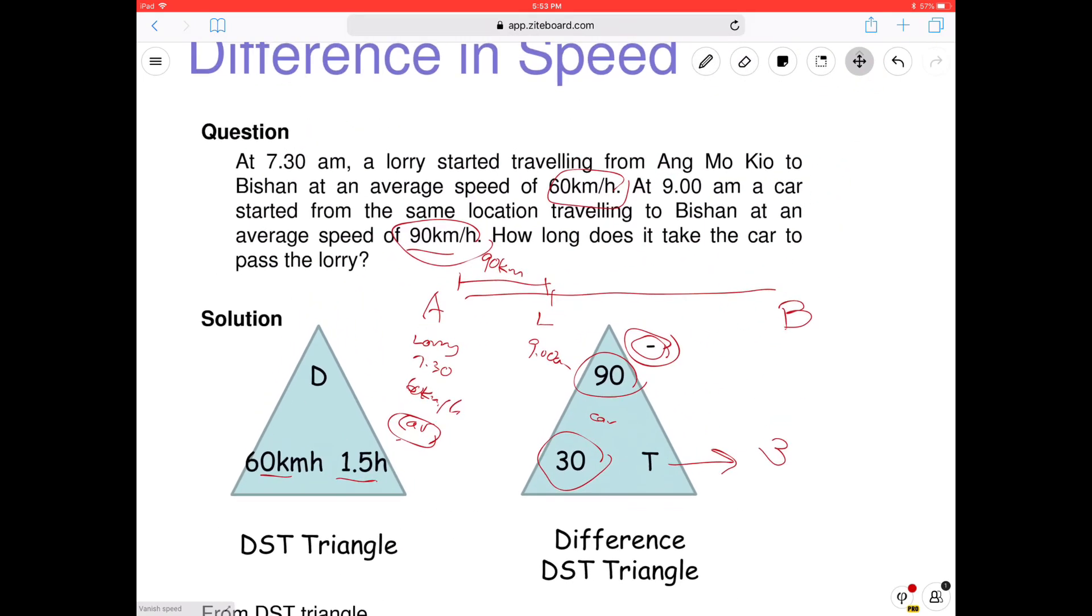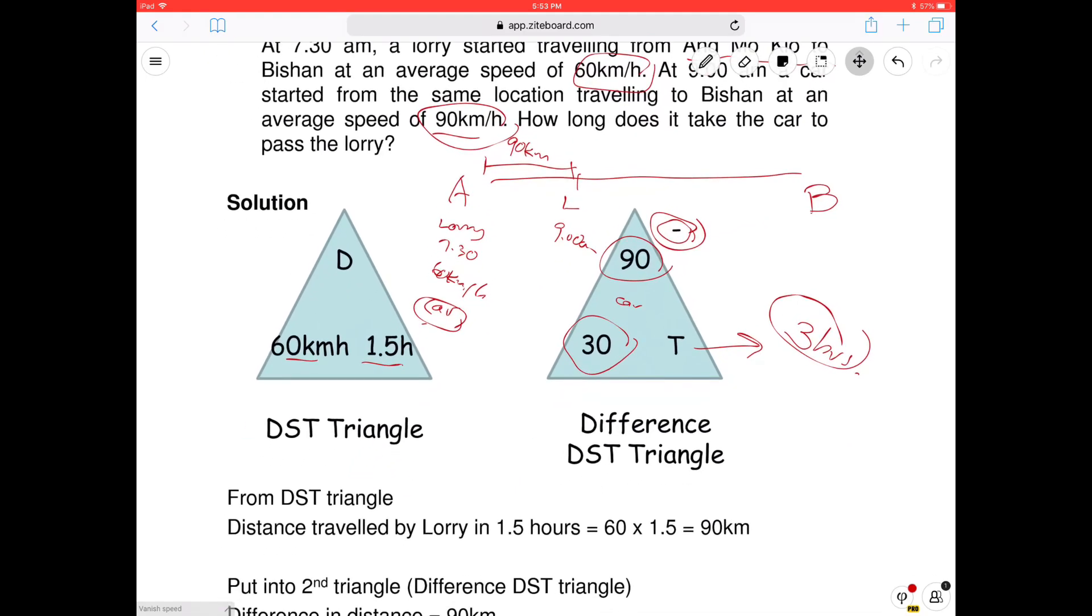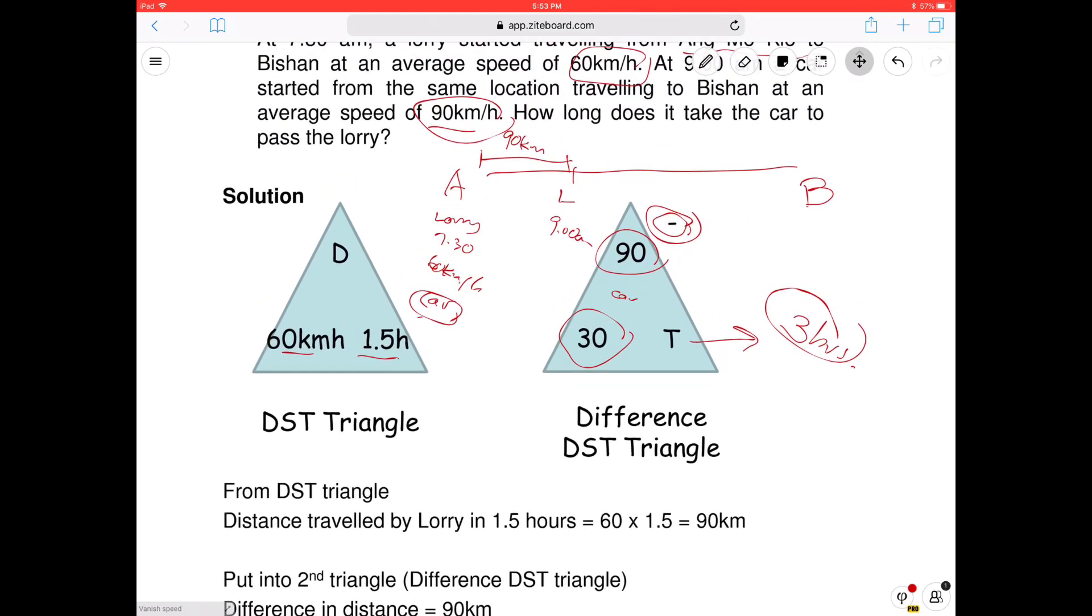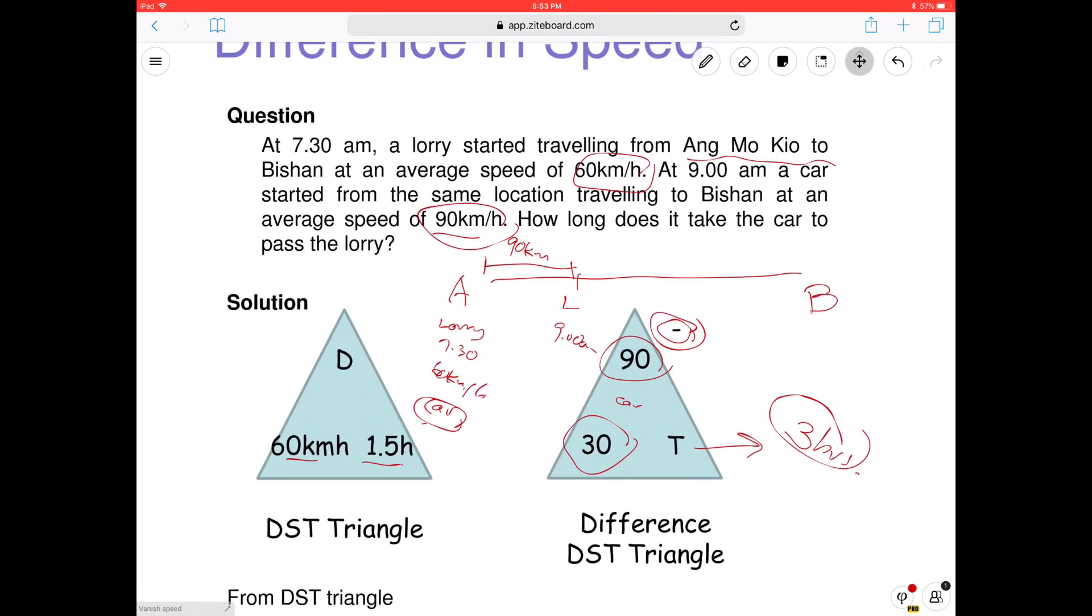Oh, so long. Yeah. Because the lorry is ahead, right? How come from Ang Mo Kio to Bishan so long? Yeah, of course. This is just a story question, right? Actually, Ang Mo Kio to Bishan is only 5 minutes. Can it be 3 hours, right? 3 hours is like a little long. Maybe they take a long, they walk there. Walk there also not 3 hours. But that's a very good observation. Yeah. Oh, sorry. It's just a story. Okay, excellent observation. Okay? So this is how it works, you see? Difference. The difference DST Triangle.